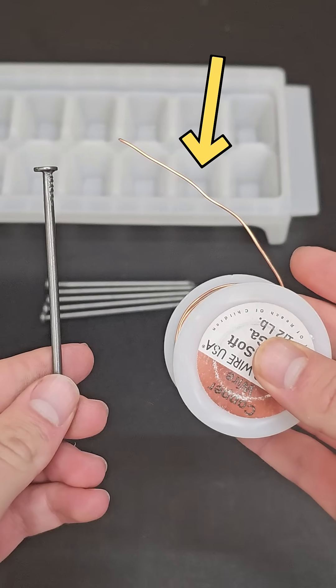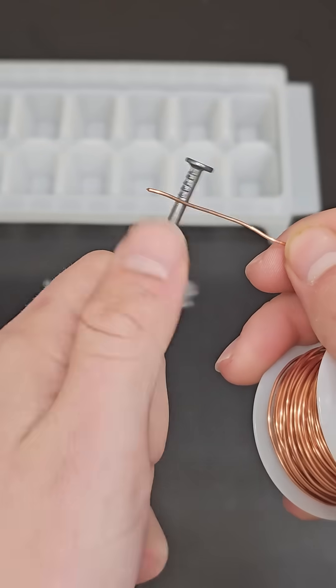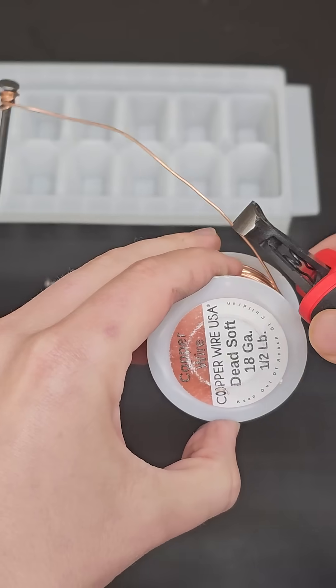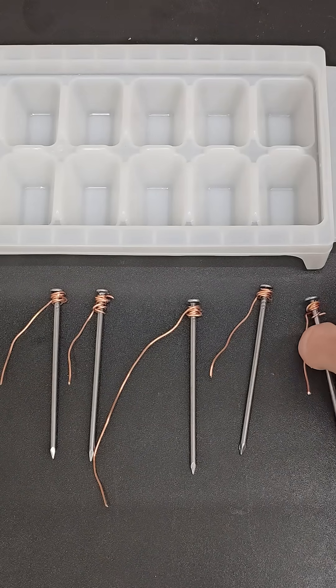First, take a galvanized nail and some bare copper wire and wrap the copper wire around the nail a few times before trimming it off. Then repeat this step four more times.